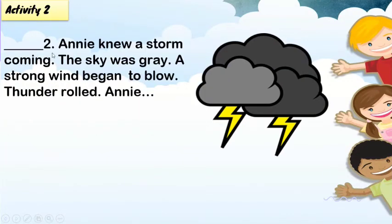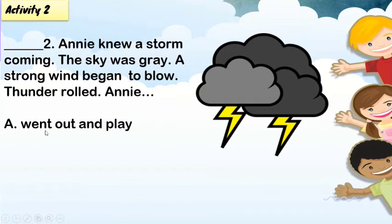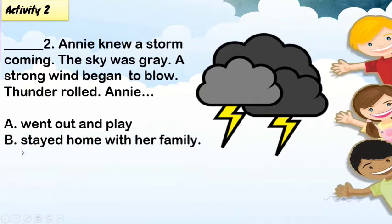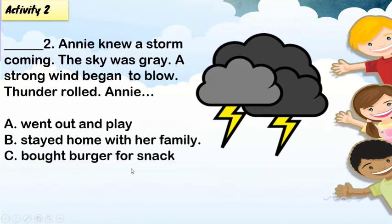Next, number two: Ani knew a storm was coming. The sky was gray. A strong wind began to blow. Thunder rolled. A: Went out and played. B: Stayed home with her family. C: Bought a burger for snack. What do you think is the correct answer? Very good. The correct answer is letter B: Ani stayed home with her family.